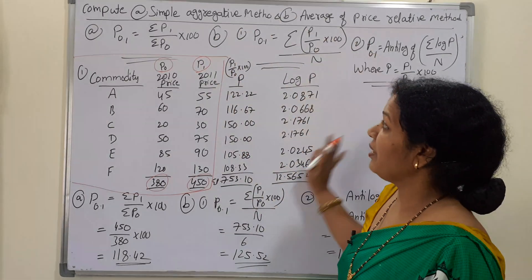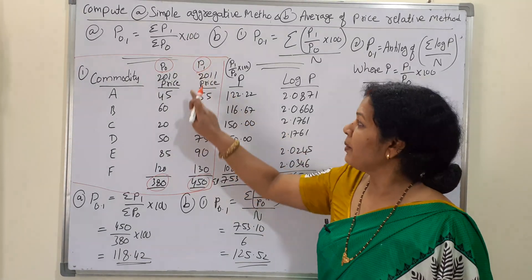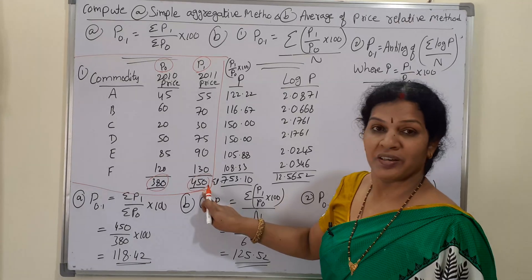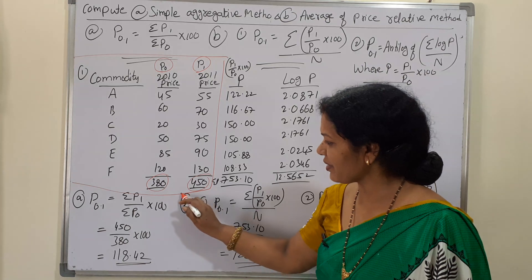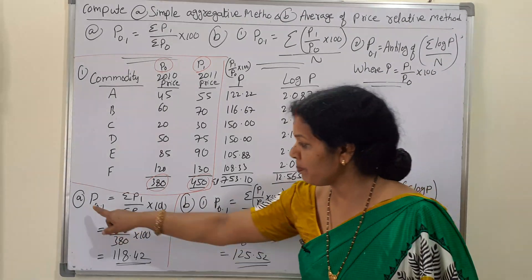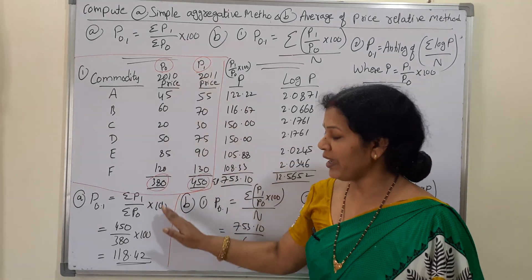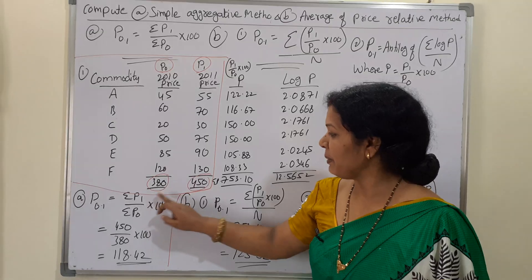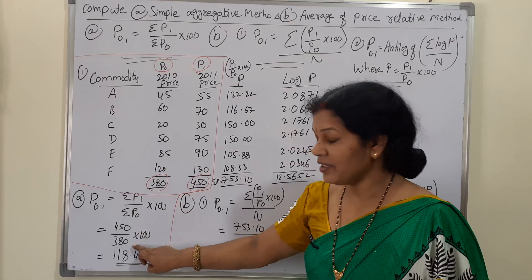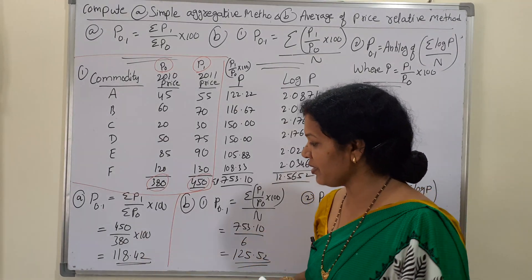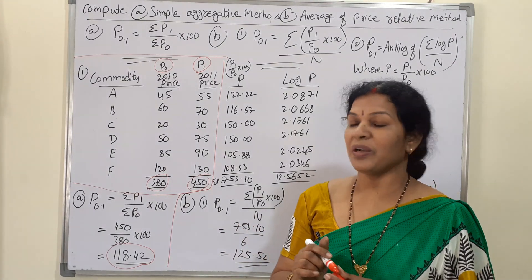For the simple aggregative method, applying the formula P₀.₁ = (ΣP₁ / ΣP₀) × 100: ΣP₁ is 450 and ΣP₀ is 380. So P₀.₁ = (450 / 380) × 100 = 118.42. The first part is complete.